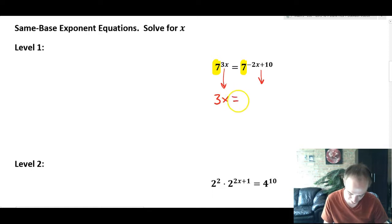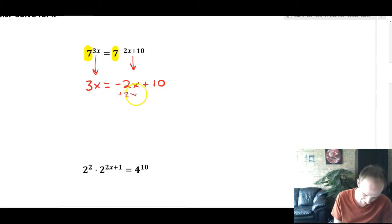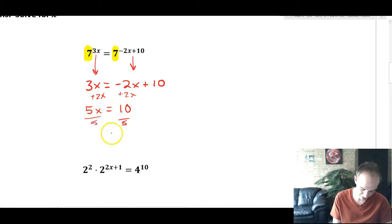3x equals -2x + 10. Now you've converted this exponent problem into what is basically an algebra problem. And so you can solve it by adding 2x and you get 5x = 10 and you can divide by 5 and you get x = 2.